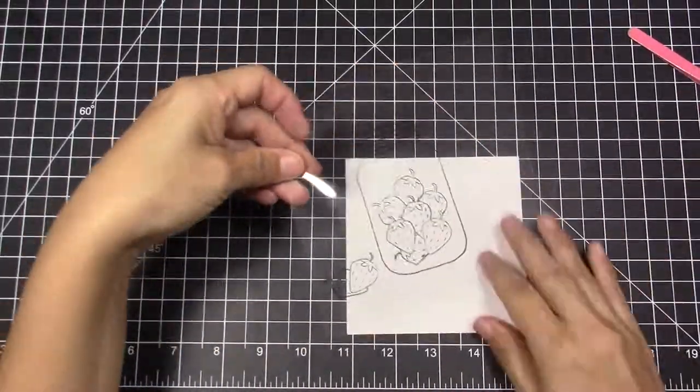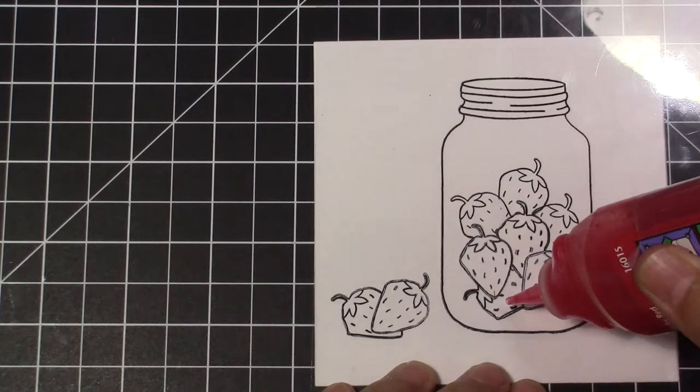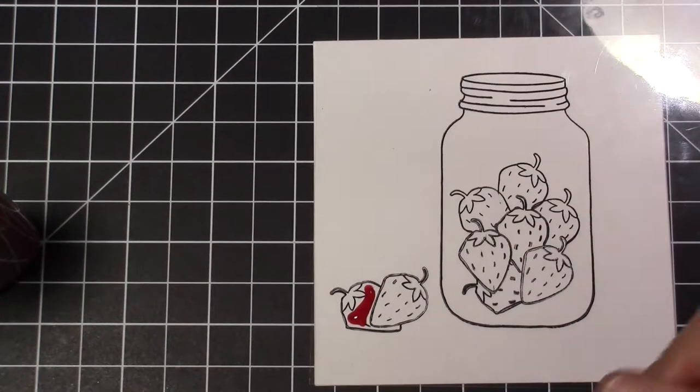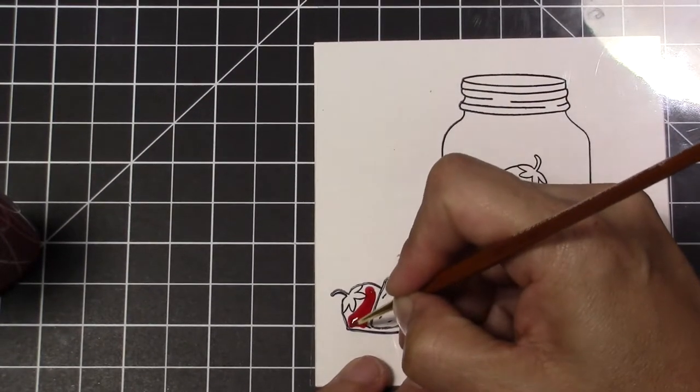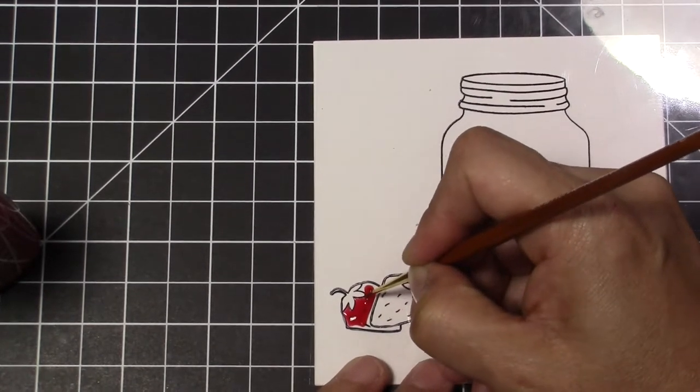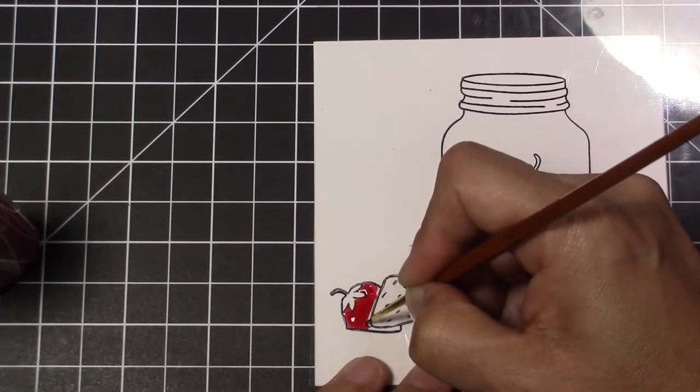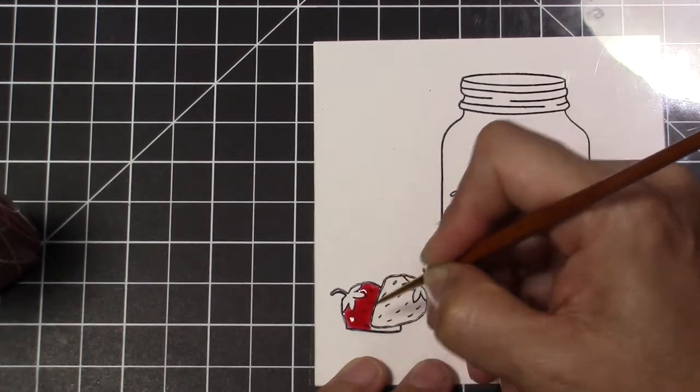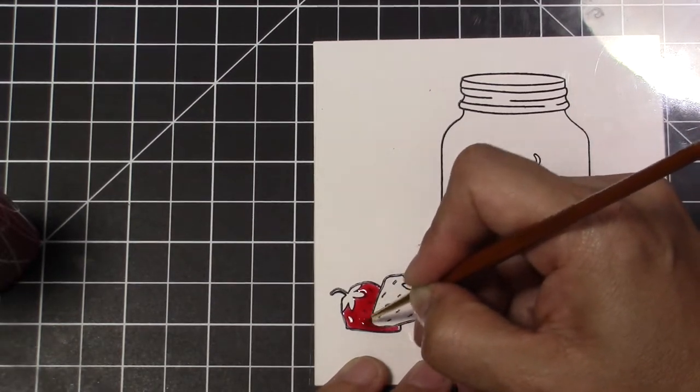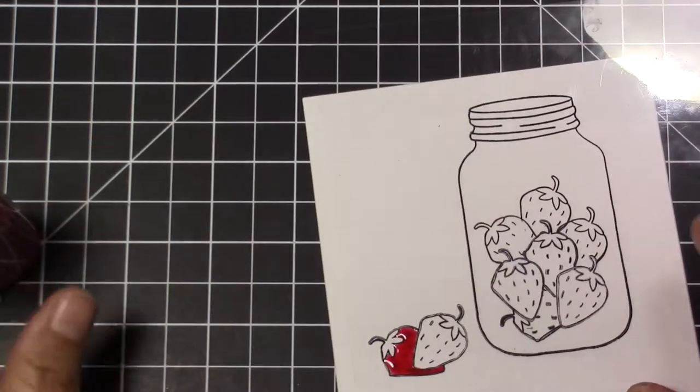When I'm finished stamping, I turn the side that I stamped face down and I color on the reverse of the stamping with glass paint because I want to keep them like a transparency. I color them to keep the seeds of the strawberry visible.